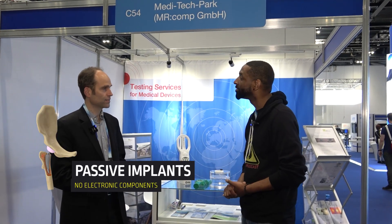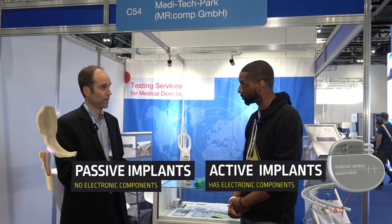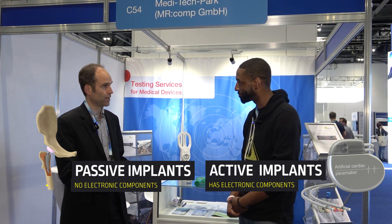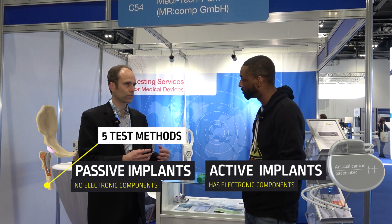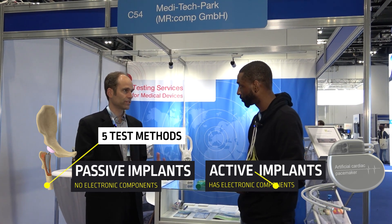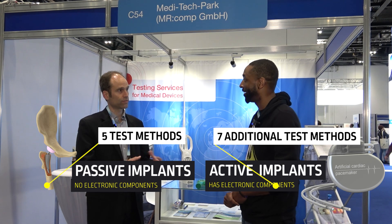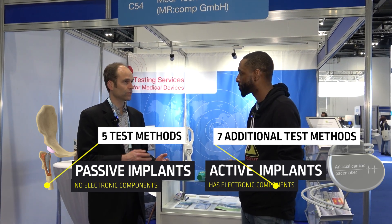Is there some sort of protocol that you guys kind of go with? Yes, exactly. So we have the passive implants and the active implants. We have about four to five test methods for the passive implants. And because the active implants and systems are also using a lot of RF and dB/dT interaction, we have another seven test methods that we go through. Testing an active implant is between half a million or one million euros or US dollars.